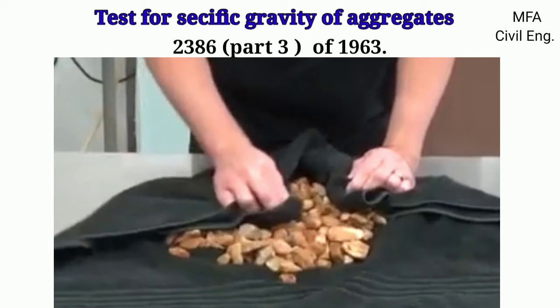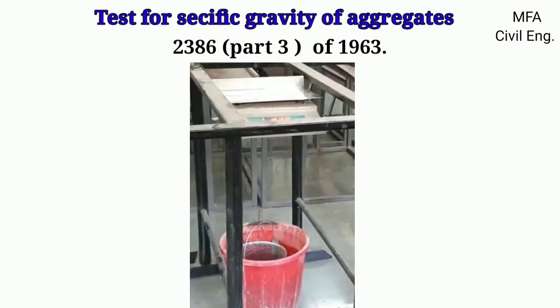Then the aggregate is transferred to a second dry cloth and further dried. The empty bucket is again immersed in water, shaken 25 times, and weighed in water. Let the weight be A2.